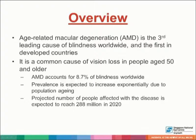Age-related macular degeneration, otherwise known as AMD, is the third leading cause of blindness worldwide and the first in developed countries. It's a common cause of vision loss in patients above the age of 50, and it accounts for 8.7% of blindness worldwide. Prevalence is expected to increase due to the aging population and is expected to reach about 288 million in 2020.